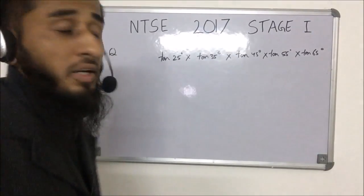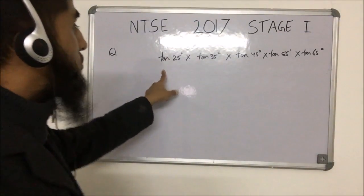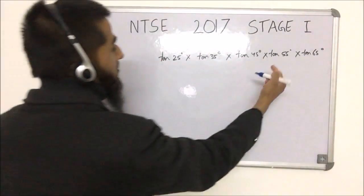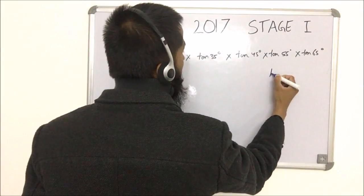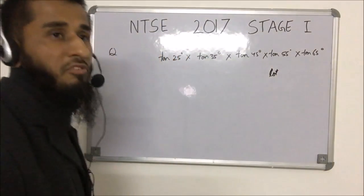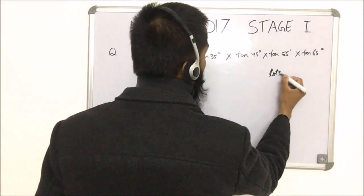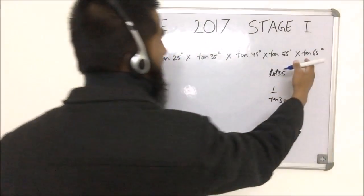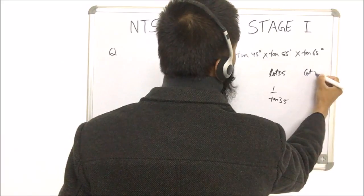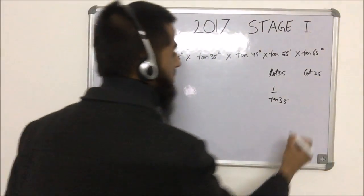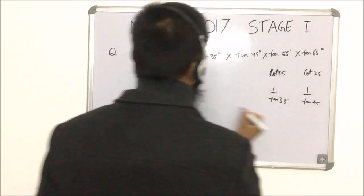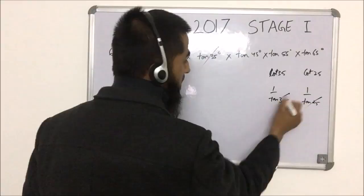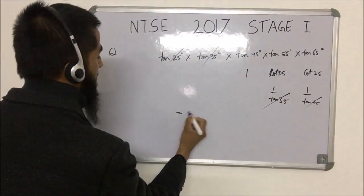This is a simple trigonometry question. We need the value of cot25° × cot35° × cot45° × cot55° × cot65°. Note that cot55° = cot(90°−35°) = tan35° = 1/cot35°, and cot65° = 1/cot25°. So cot25° cancels with cot65°, and cot35° cancels with cot55°, leaving cot45° = 1. The final answer is 1.